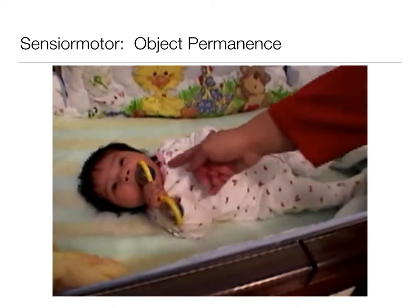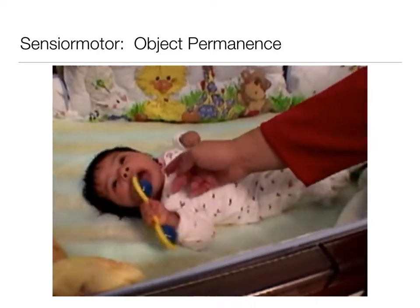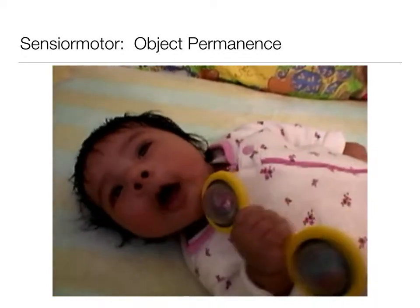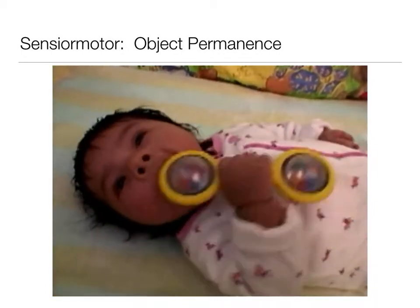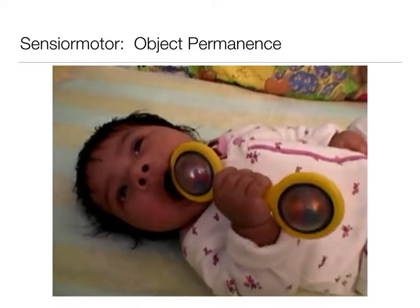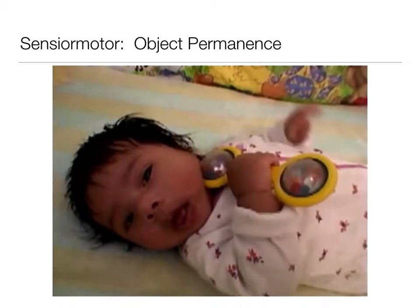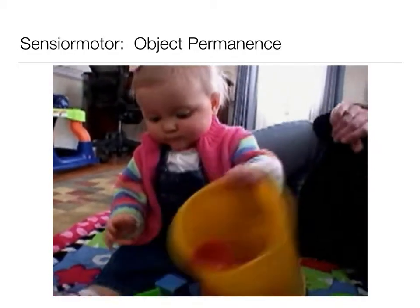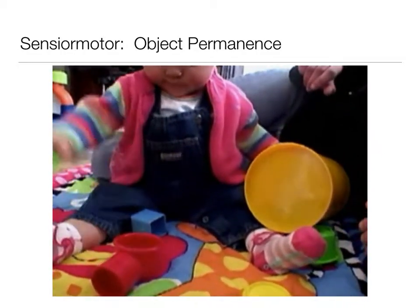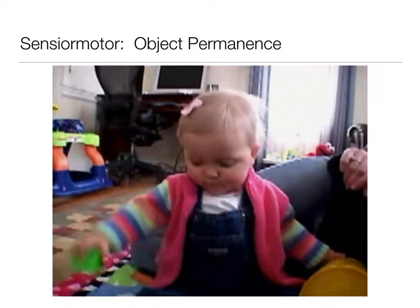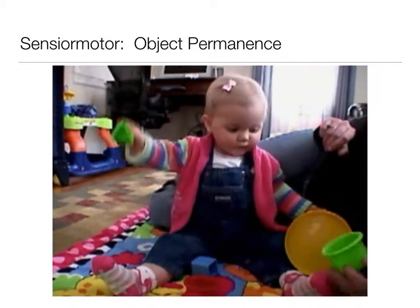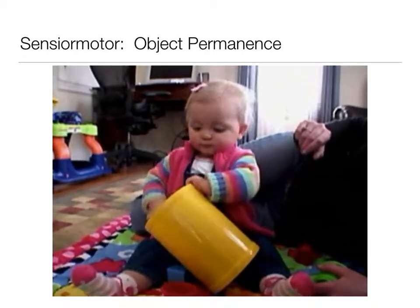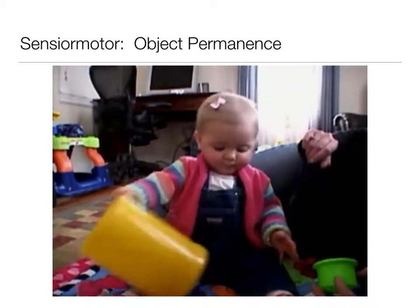Jean Piaget proposed a comprehensive theory of child cognitive development, identifying four major periods or stages. The first, the sensorimotor stage, spans birth to two years. During the sensorimotor stage, infants learn to coordinate sensory information and motor activity, becoming increasingly able to act purposefully on their environments and solve problems.